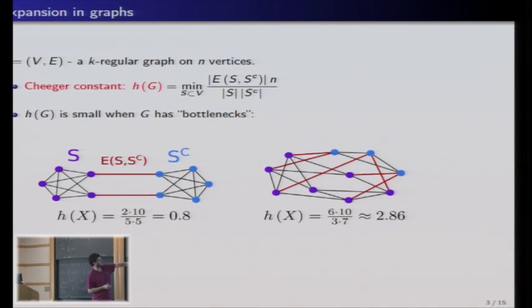So this constant is small when the graph looks like this, when it has bottlenecks. Here I have a cut into very large, into half and half of the graph with very few edges between, so this is a small Cheeger constant. This is a high Cheeger constant, this is the best I can do in this graph. So this graph looks very nice, but this is what we want. We want graphs that look like this because they have the good properties we've seen in the complete graph.